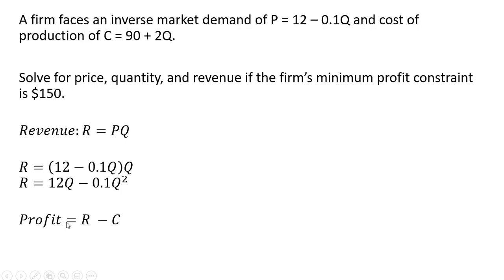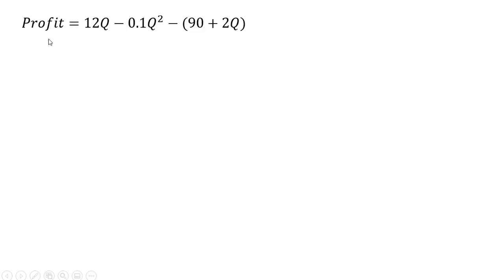And profit is just revenue minus cost, so plugging in our revenue equation from above, and then subtracting out total cost, we have the following result. Rewriting and simplifying, distributing this minus sign, so minus 90 and minus 2Q.